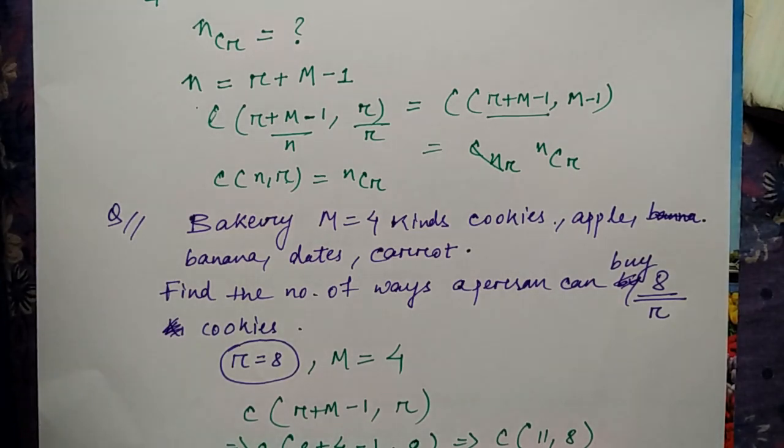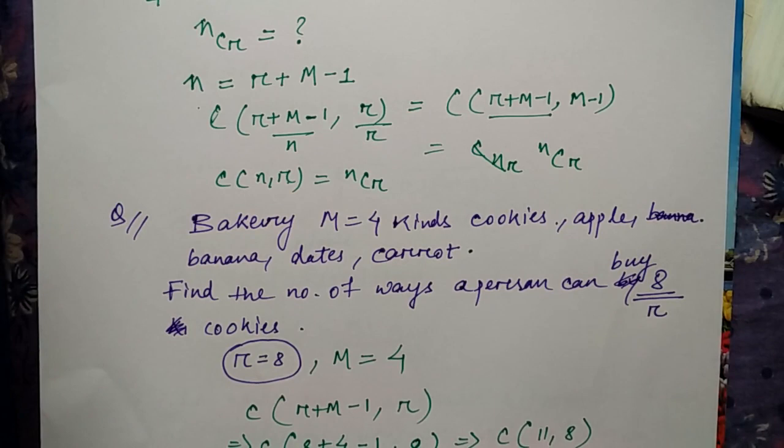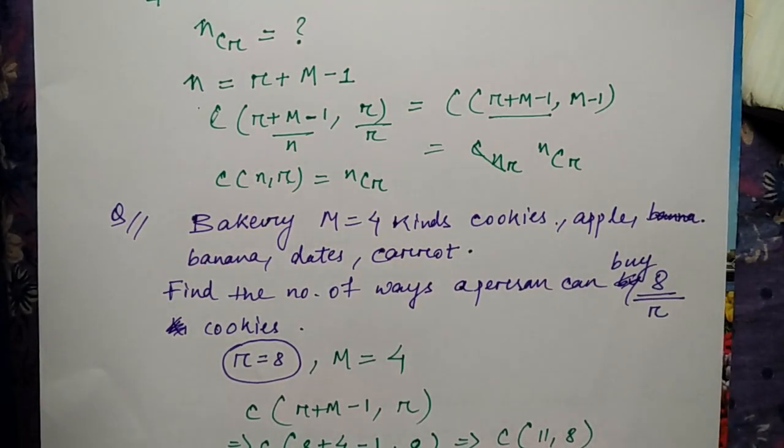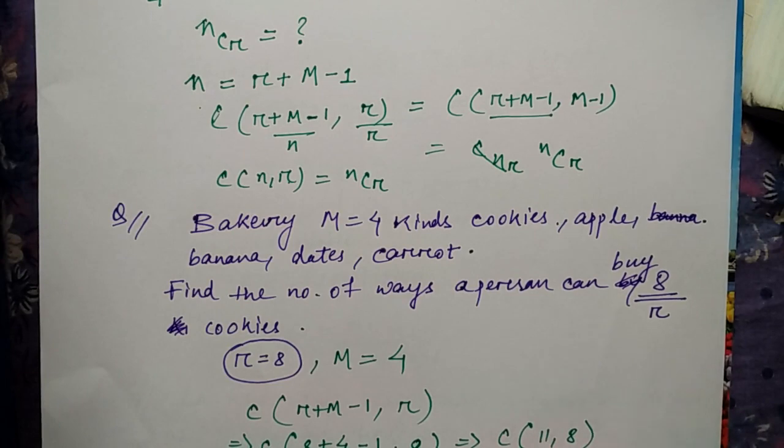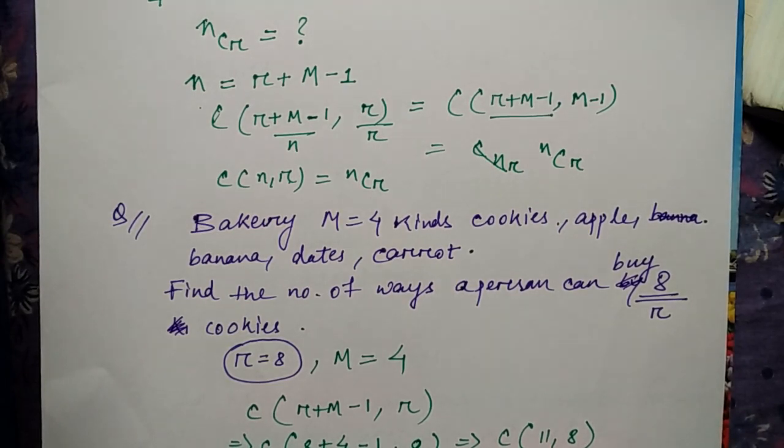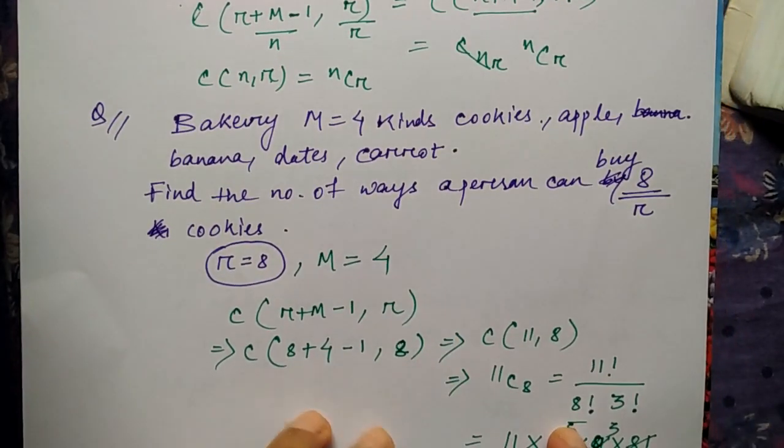So let me find out: eleven into ten into nine into eight factorial divided by eight factorial into three into two. So you can just cancel it out. The answer is 165.